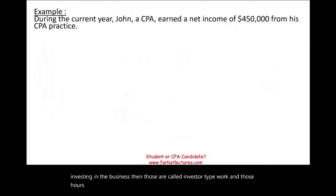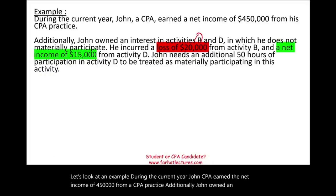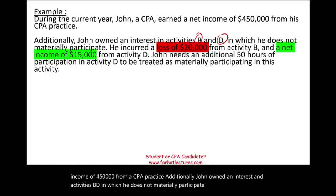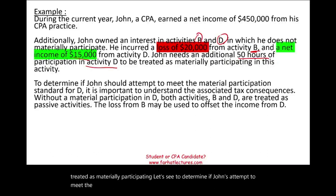Let's look at an example. During the current year, John's CPA earned net income of $450,000 from his CPA practice. Additionally, John owned an interest in activities B and D, in which he does not materially participate. He incurred a loss of $20,000 from B and net income of $15,000 from D. Now, if John puts an additional 50 hours into activity D, it will be treated as an active business with material participation. Let's see if that's a good idea.